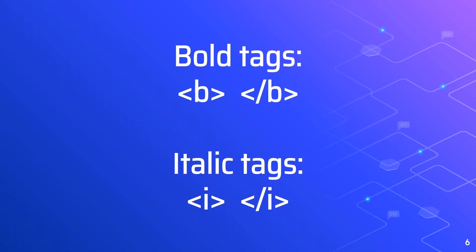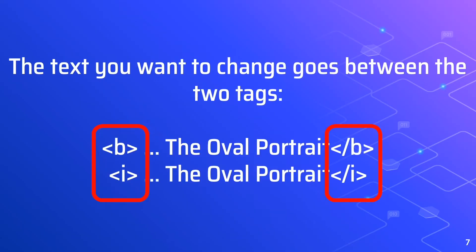There are two useful tags: the bold and italic tags. They are quite easy to use. Here are the bold tags and here are the italic tags. The text you want to change goes between the two tags. So you have the opening tag B, then the text inside, and the closing tag B. Then the opening tag I, the text in between, and the closing tag I.